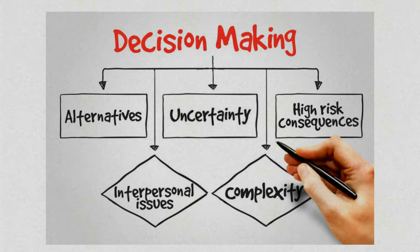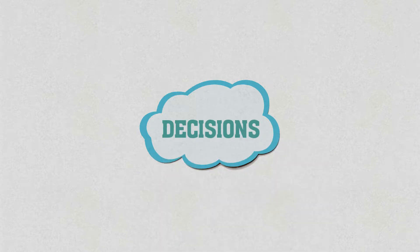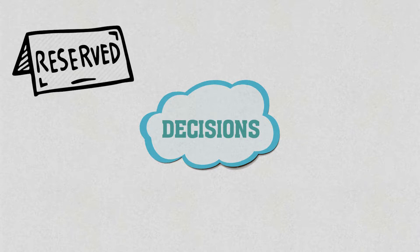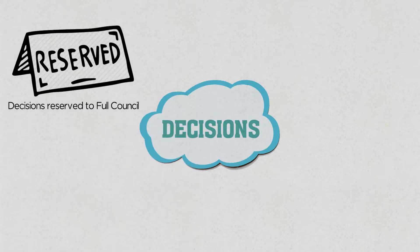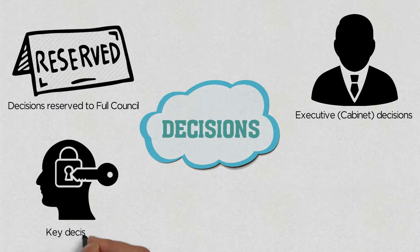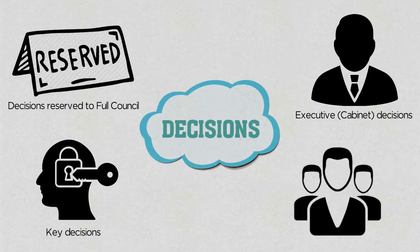Decisions in local authorities are made at different levels depending on the nature of the decision. The constitution provides for a responsibility of functions section which sets out where decisions will be taken. There are several types of decisions: decisions reserved to full council, executive cabinet decisions, key decisions, and non-executive decisions. Lawfully, there are a variety of decision makers.